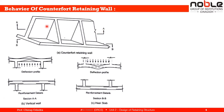Section AA is taken on the vertical wall — the stem — and section BB is taken on the heel slab. Figure B corresponds to section AA on the vertical wall, and figure C corresponds to section BB on the heel slab. On section AA, the retained earth mass acts as a lateral earth pressure on the vertical wall.